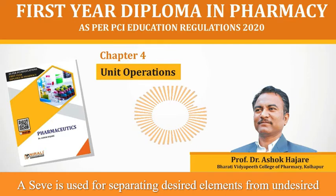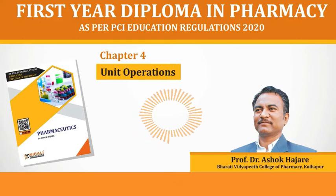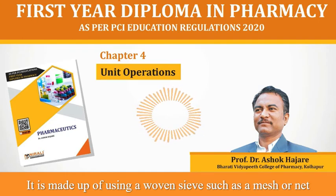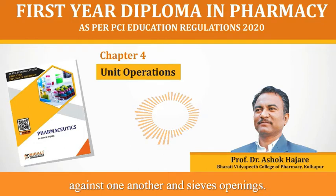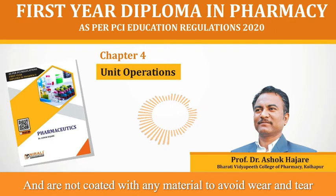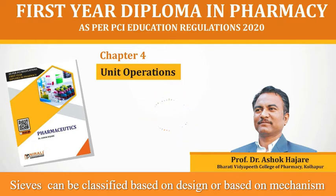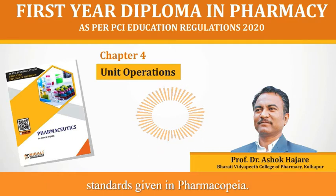A sieve is used for separating desired elements from undesired material or for characterizing the particle size distribution of a sample. It is made up of a woven mesh, net or metal. Coarse particles are separated or broken up by grinding against one another and sieve openings. Generally, pharmaceutical sieves are made up of stainless steel, brass, bronze, etc., and are not coated with any material to avoid wear and tear as well as contamination. Sieves can be classified based on design or based on mechanism of sieving, and must comply with pharmacopoeia standards.